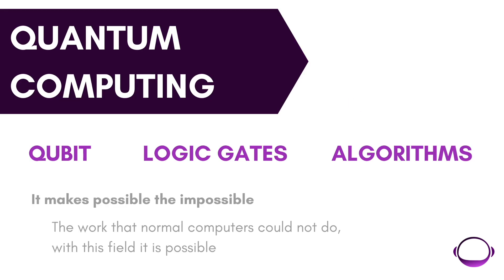The basis of quantum computing focuses on the use of qubits, which through logic gates can be used in algorithms. Unlike classical computation, whose primary unit of information is the bit, which can be in state 0 or 1, our qubits can be in both states. We will not be able to know exactly in which position our qubit is, since this science is based on the probability and statistics of the processes subject.